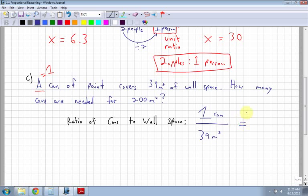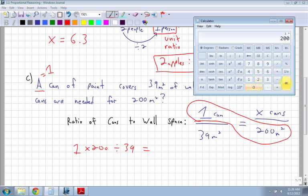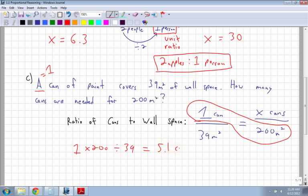Now I know that these are going to be equivalent ratios, and I'm going to say how many cans are needed. So I know cans are on top, so x cans, because I'm trying to figure out how many cans are needed per 200m². It's important that you understand how to set up the ratio. Now again I do the cross multiplication. I take 1 times 200 divided by 39. So I take 1 times 200, which is obviously just going to be 200 divided by 39 is going to be 5.1.